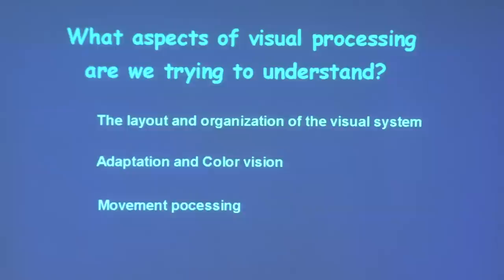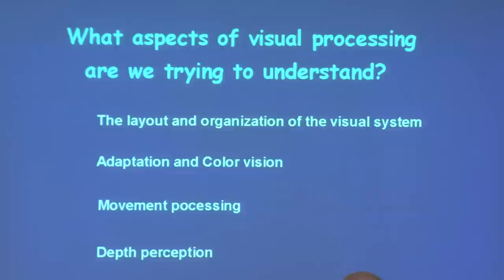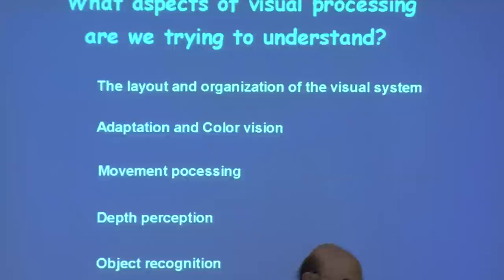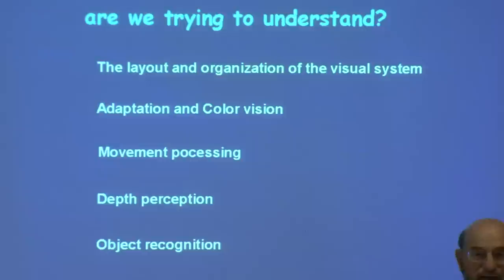Depth perception is particularly interesting because the retinal surface is essentially a two-dimensional arrangement, yet from whatever falls on these two dimensions in the left and right eyes, the brain needs to convert to be able to see the third dimension, and several mechanisms have evolved to accomplish that. Yet another very complex topic is how we can recognize objects — perhaps the most complex of those is our incredible ability to recognize faces.